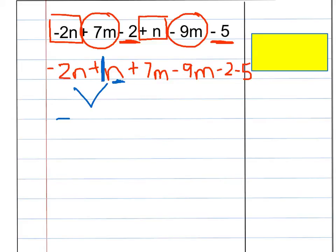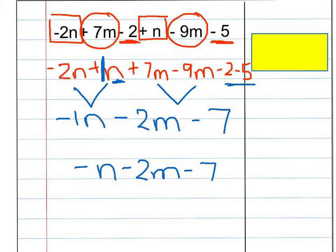And that can be written like this. Negative 1N, or I could have written it as negative N. My M's are the 7M minus 9M, so that would give me a negative 2M. And then here's my whole numbers, negative 2 minus 5, and that would be a negative 7. So if I would write this out, I would want to see it as negative N minus 2M minus 7.